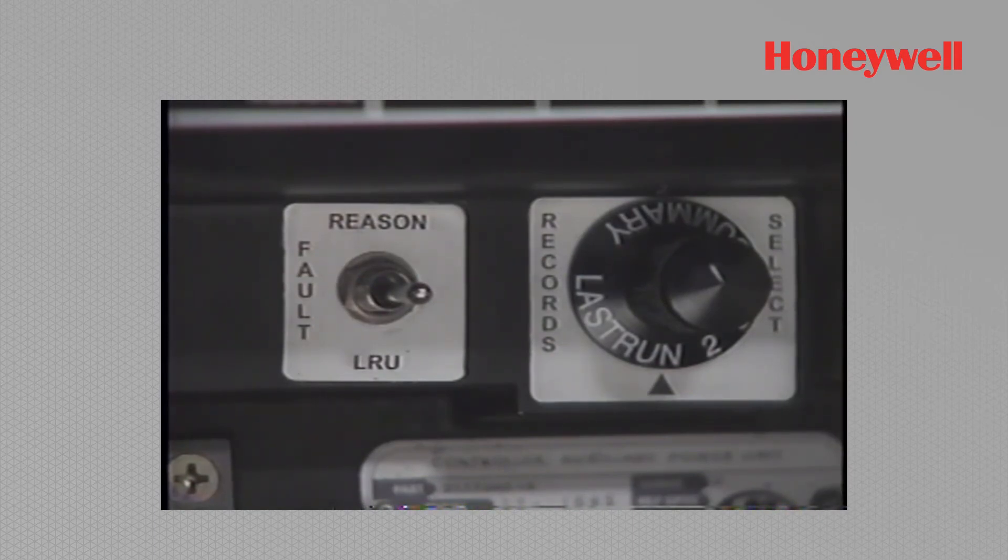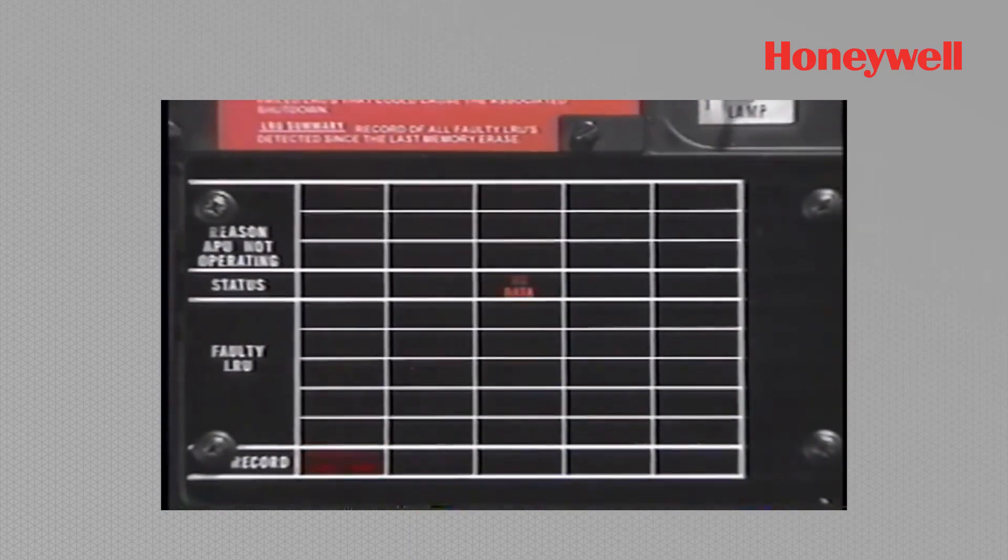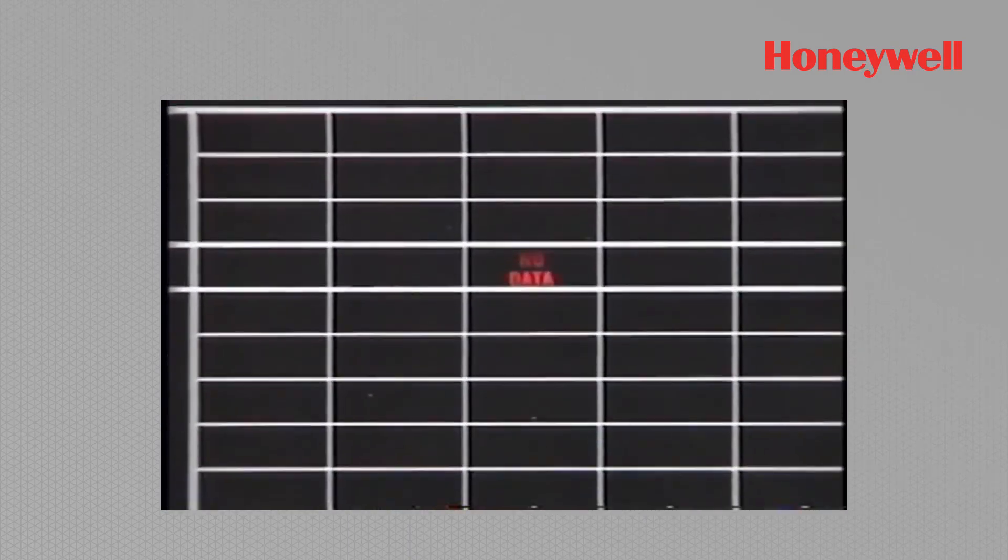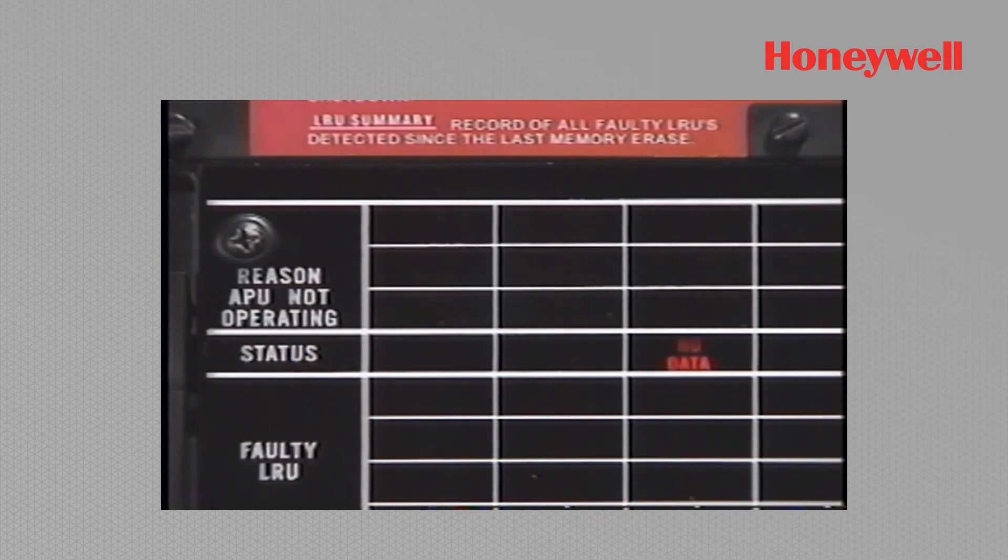Placing the record select switch to last run and the fault toggle switch momentarily to reason will display no data until 30 seconds have elapsed. If a door open signal is not received within 30 seconds after completion of pre-start bite, door system will be displayed as reason APU not operating.